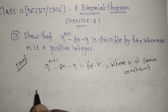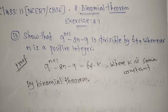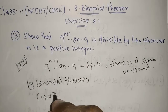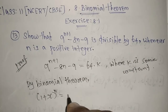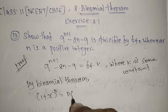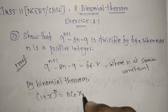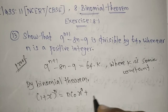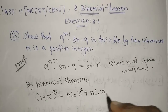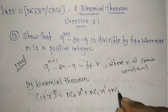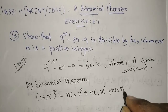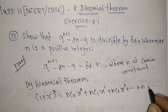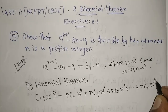For this I am going to use the Binomial Theorem: (1 + x)^n = nC0 x^0 + nC1 x^1 + nC2 x^2 + ... + nCn x^n.